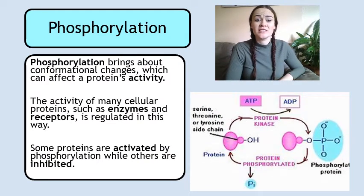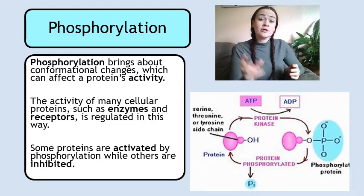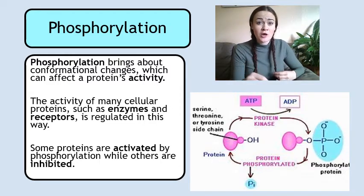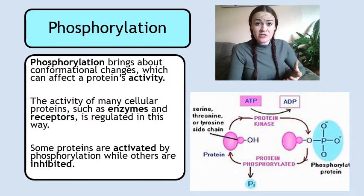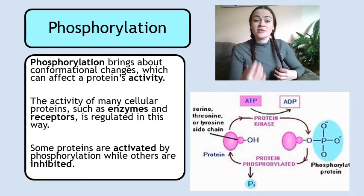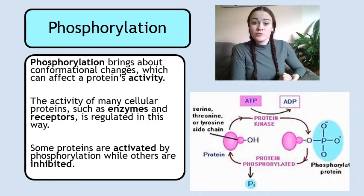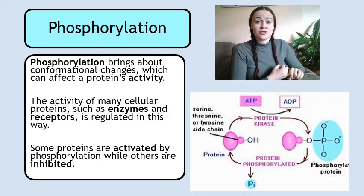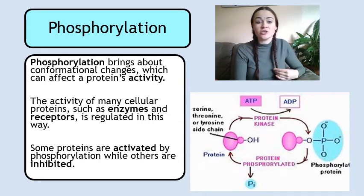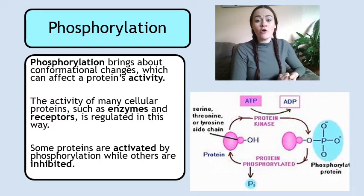Phosphorylation and dephosphorylation are very important in the regulation of a protein's activity. As soon as a phosphate is added or removed, it changes the conformation of the protein, which changes the function and activity of the protein. Many types of proteins, like enzymes and receptors, are regulated in this way — they can be activated or deactivated by the addition or removal of a phosphate.